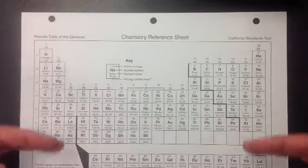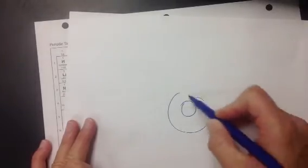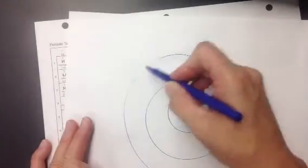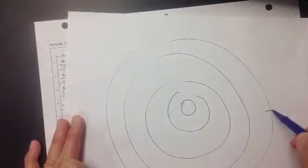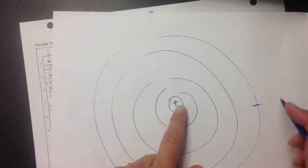As you move down the periodic table, what's happening is that we are getting more and more energy levels. So as we move down, the electrons are getting further and further away from this positive nucleus. And the further it is away from the nucleus, the easier it is to pull away from that atom.